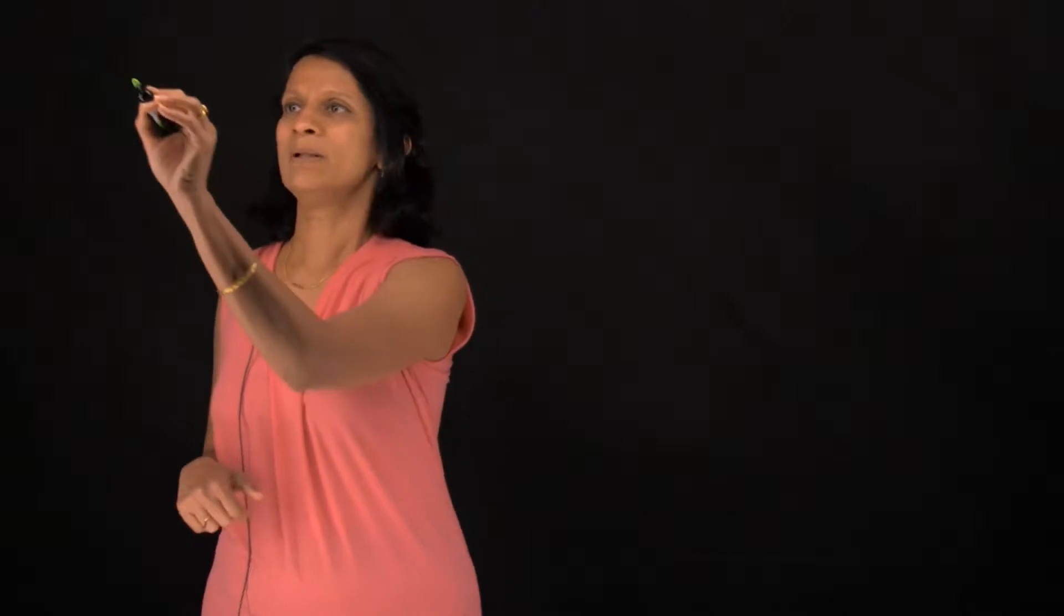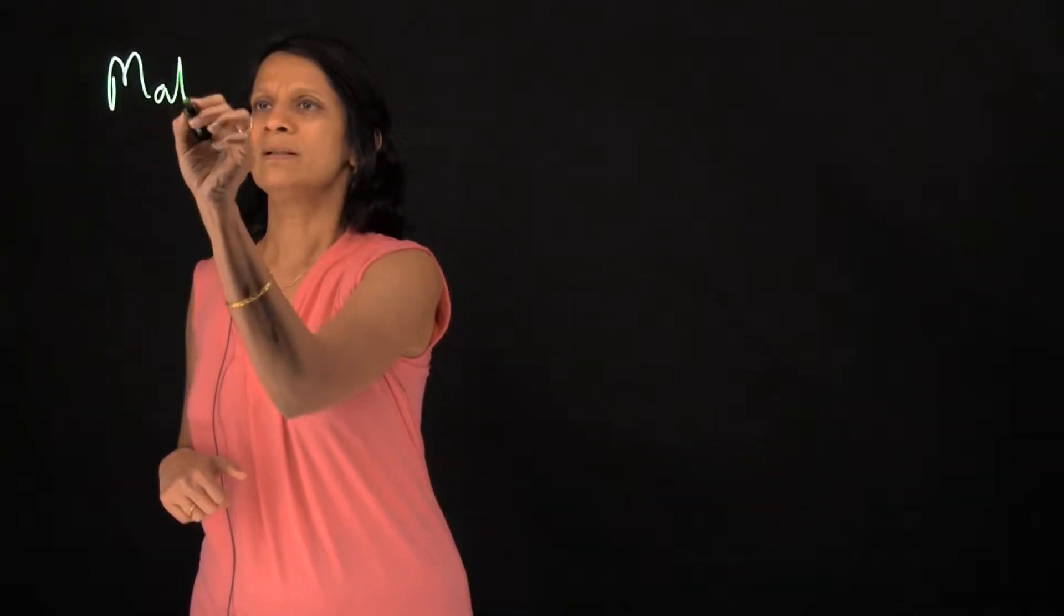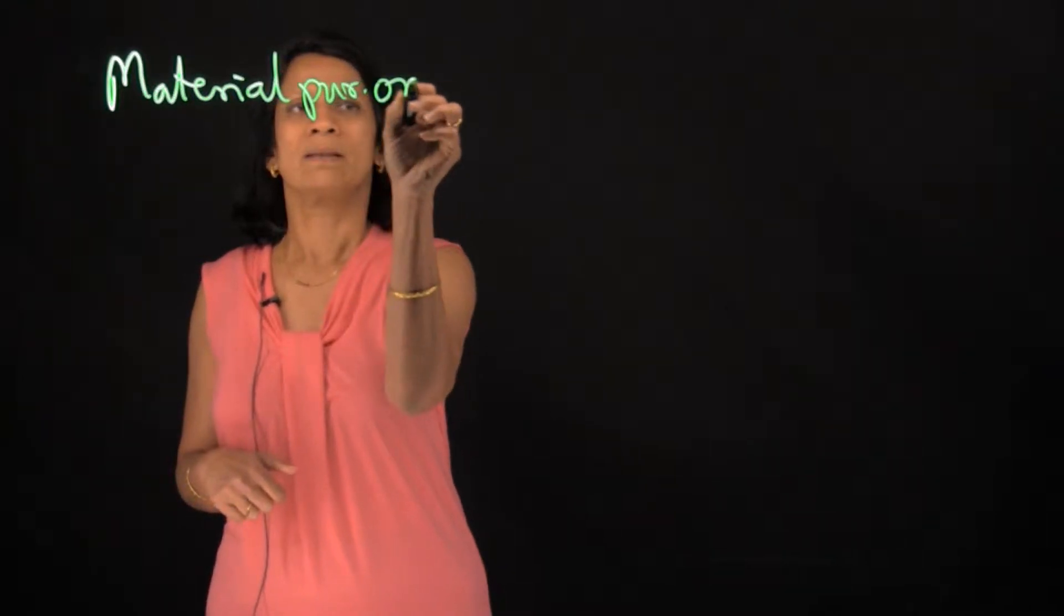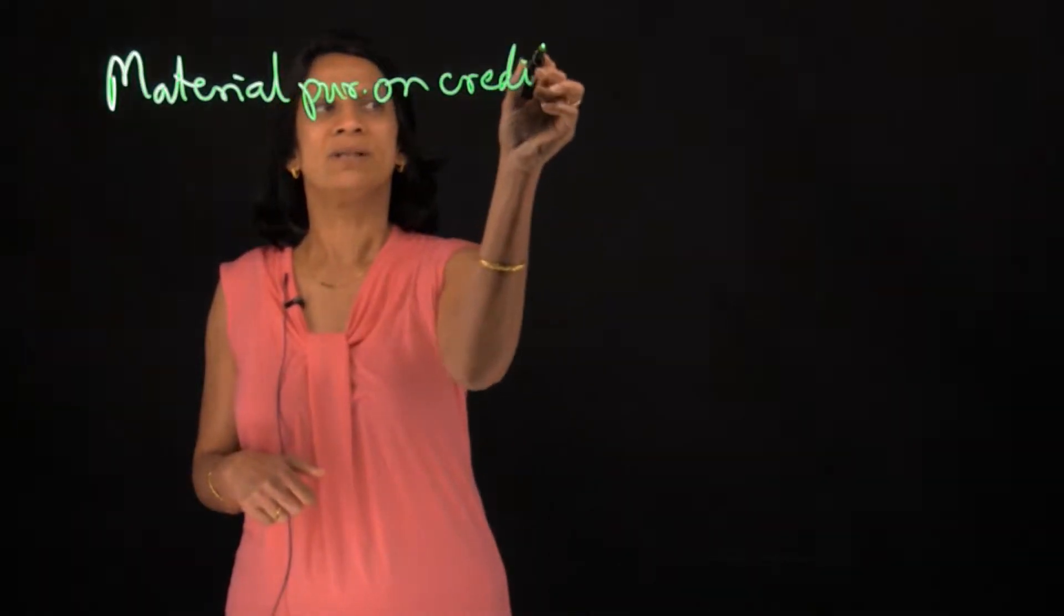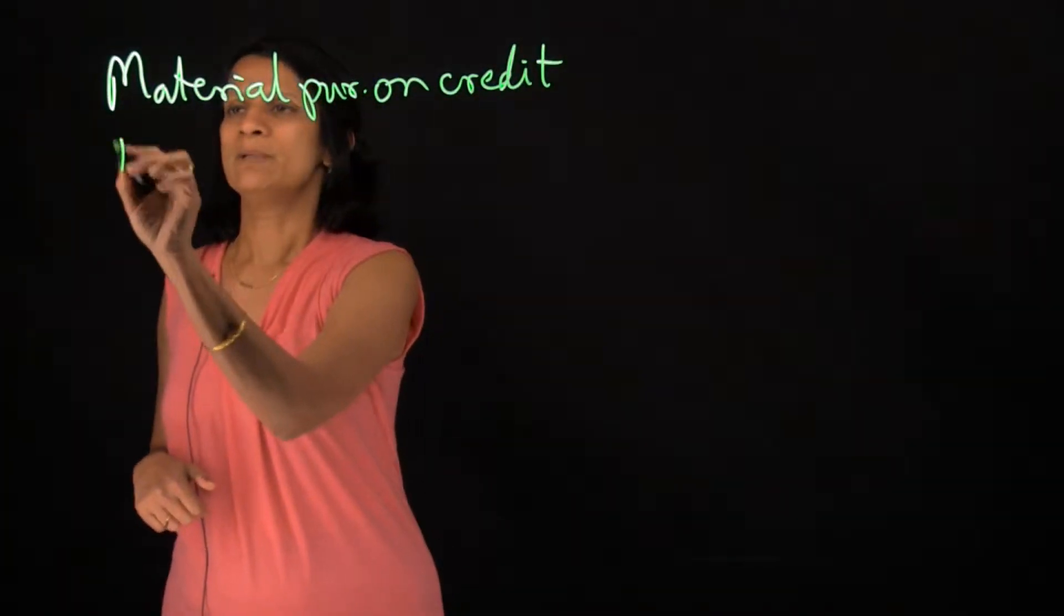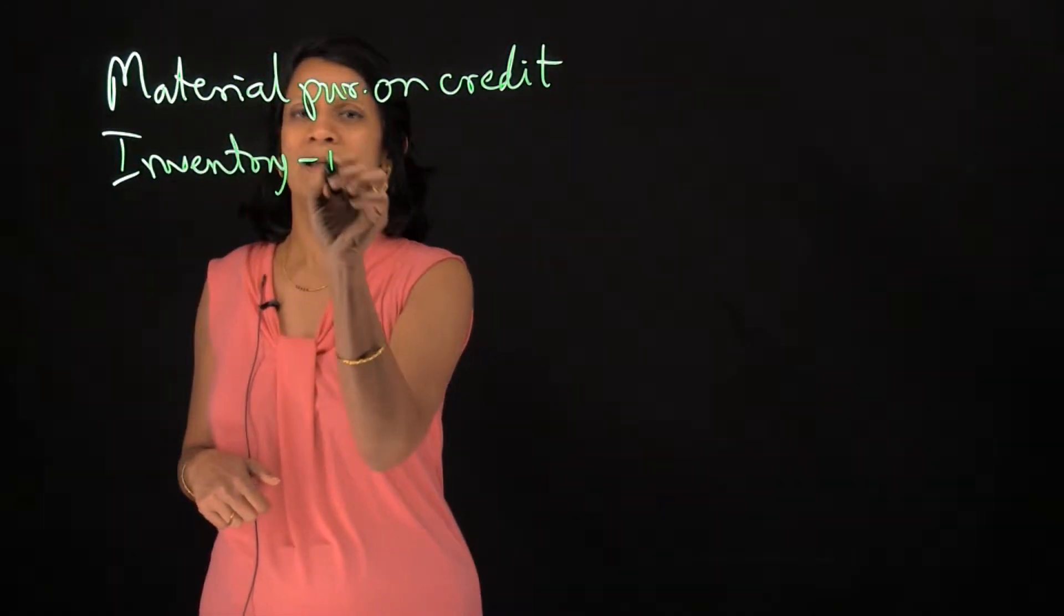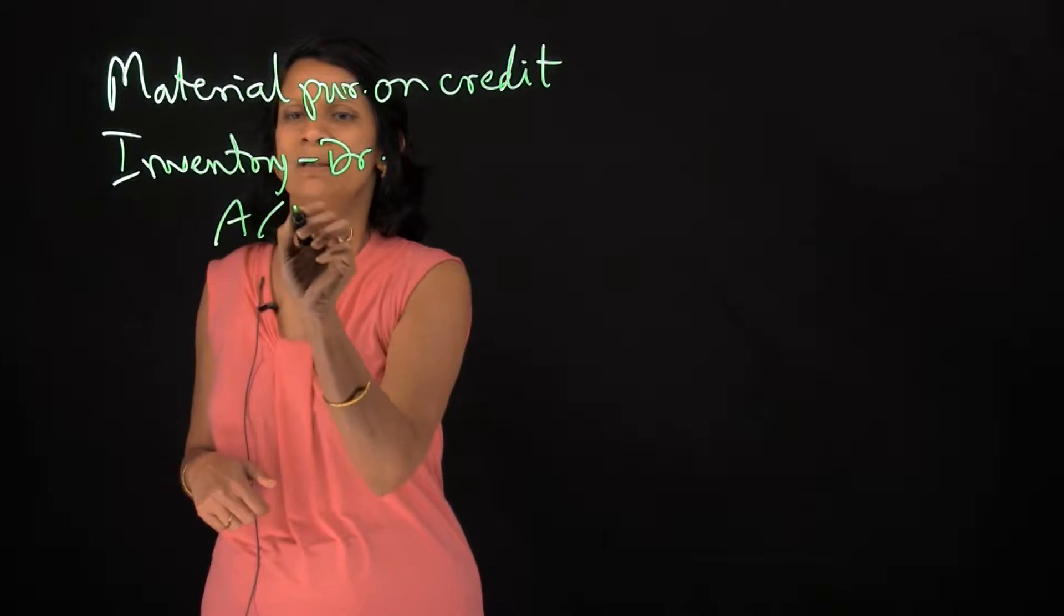So let's take the same example. I had purchased material on credit and my journal entry was, if you remember, it was inventory debit and accounts payable credit.